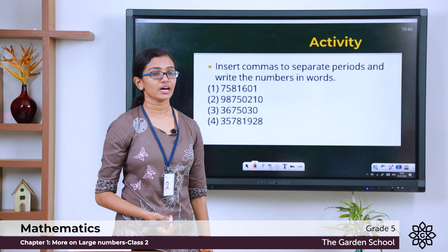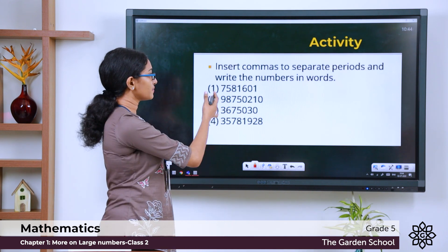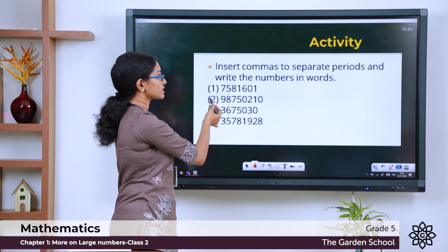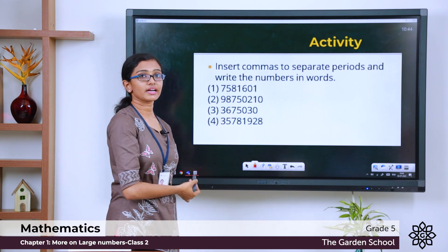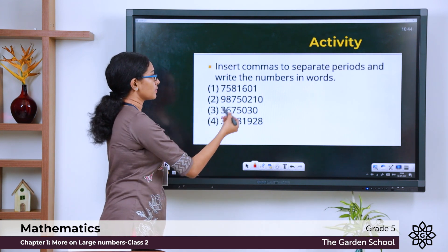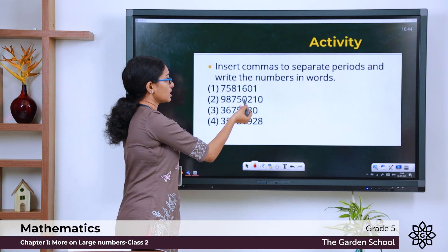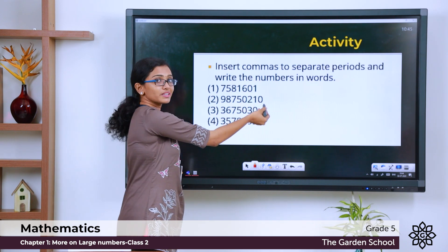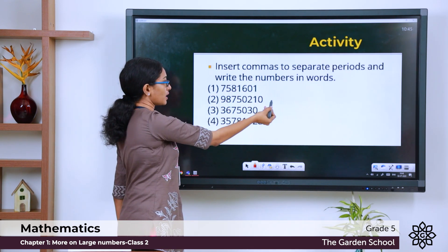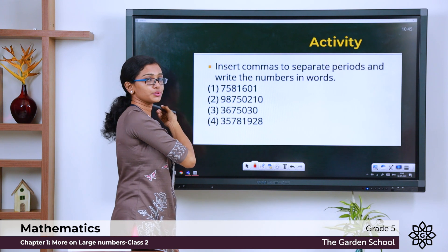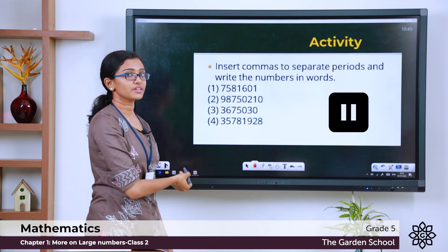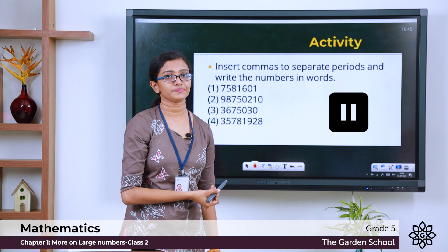Let us do an activity now. I have given a few questions here. You have to insert commas and write the numbers in words in your notebook. Note that whenever we are inserting commas, you start grouping the places from right to left. You start from the 1s and go to the higher places. Please finish this activity and come back.